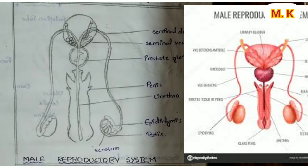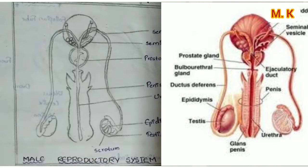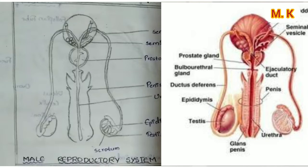A pair of testes, Vasa efferentia, a pair of epididymis, a pair of Vasa deferentia, a pair of seminal vesicles, ejaculatory duct, prostate gland, a pair of Cowper's glands, and urethra.